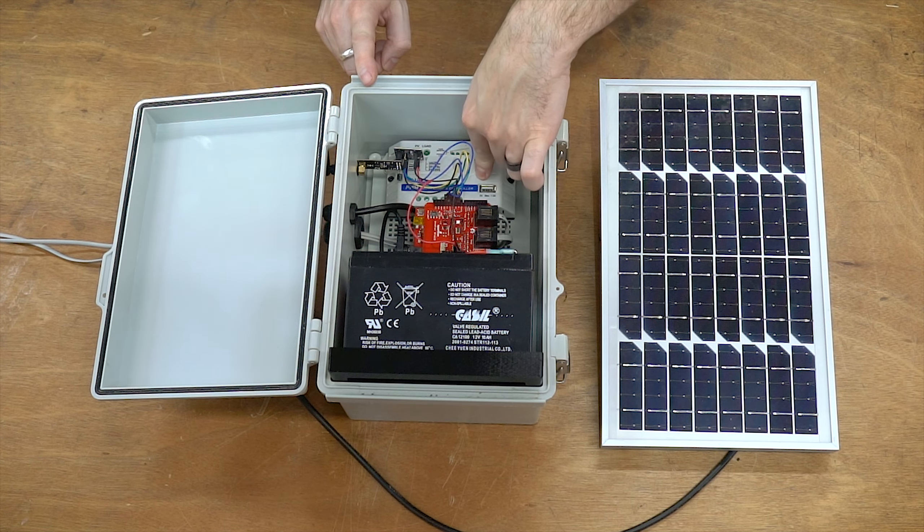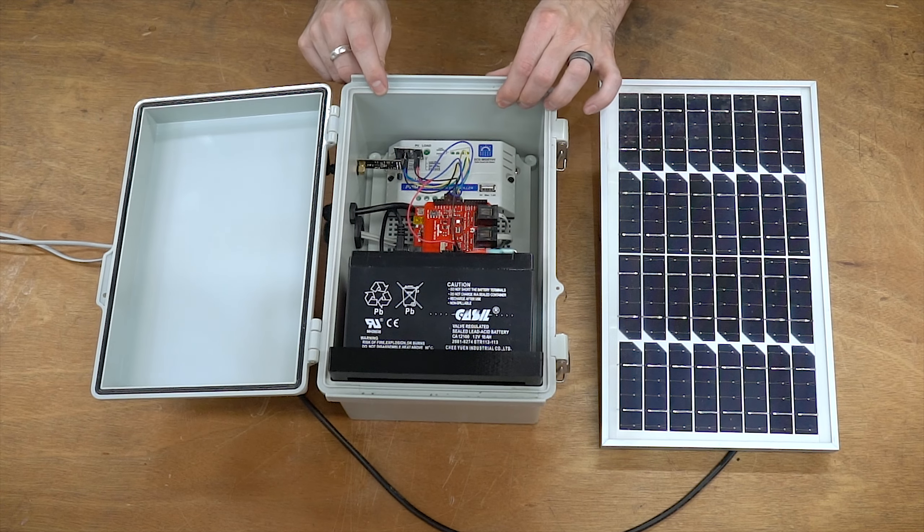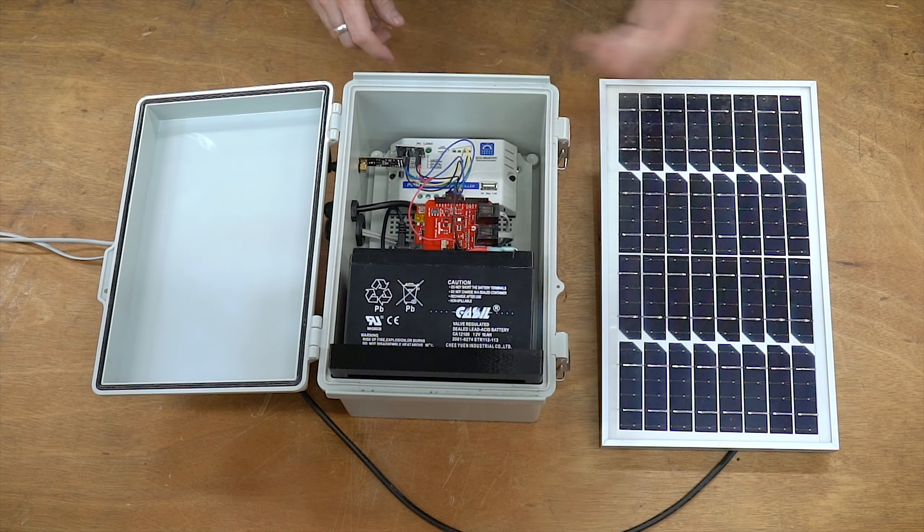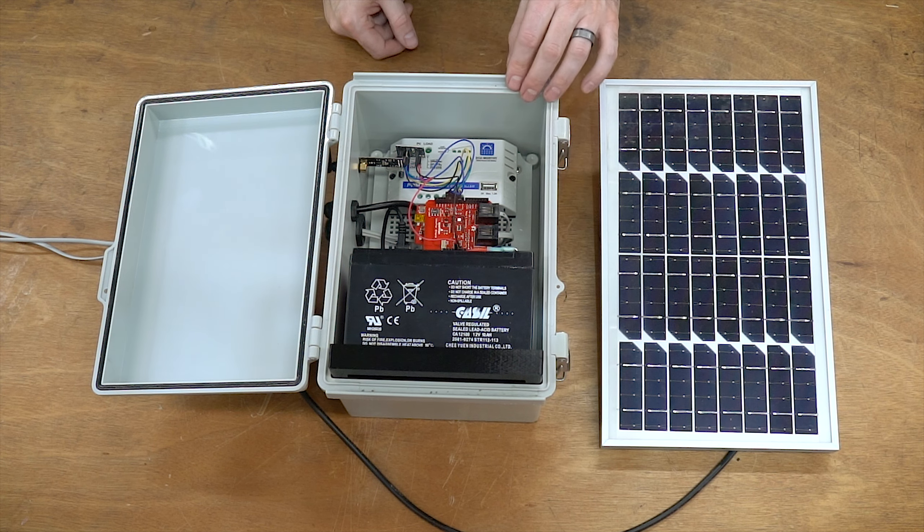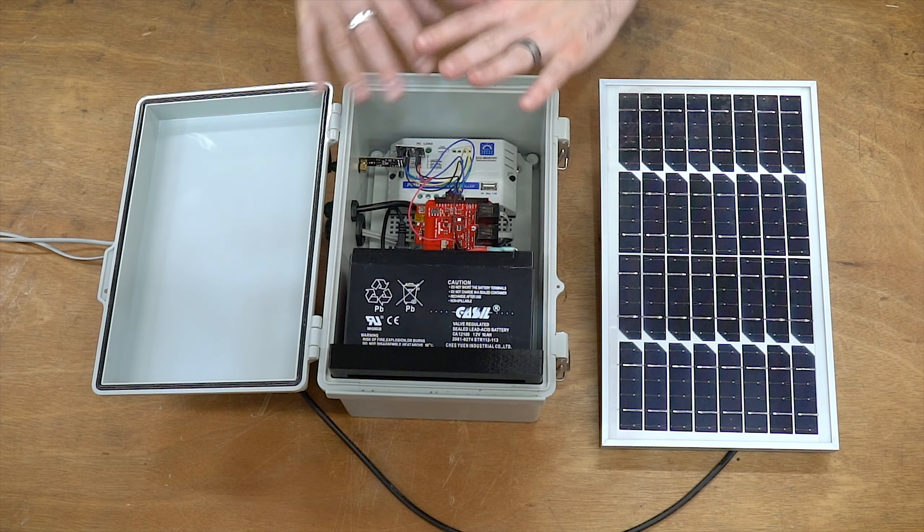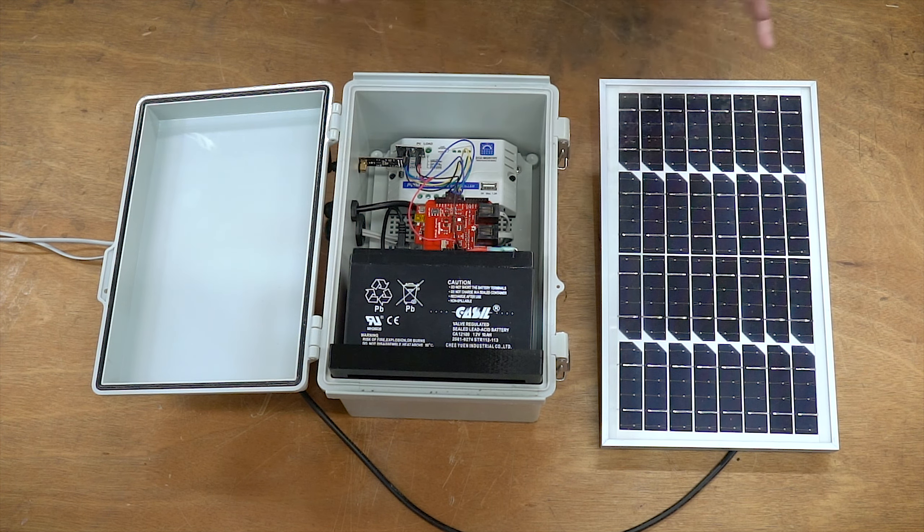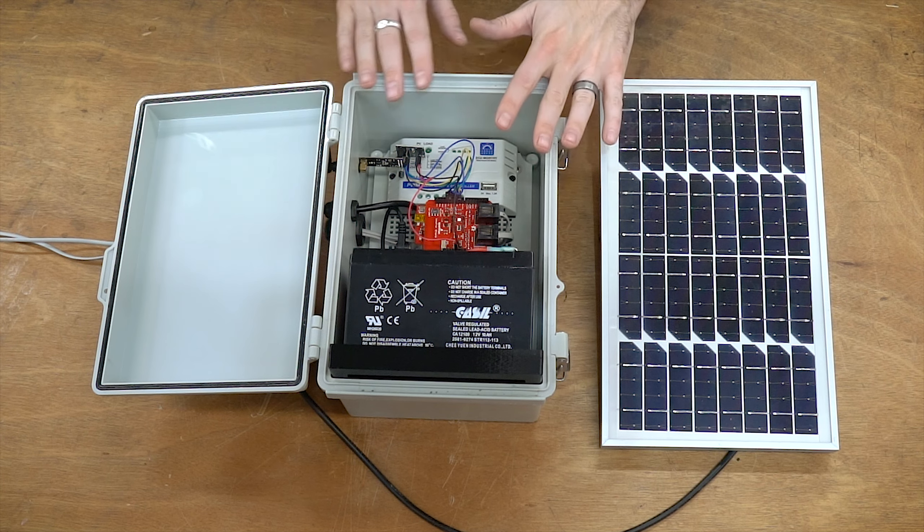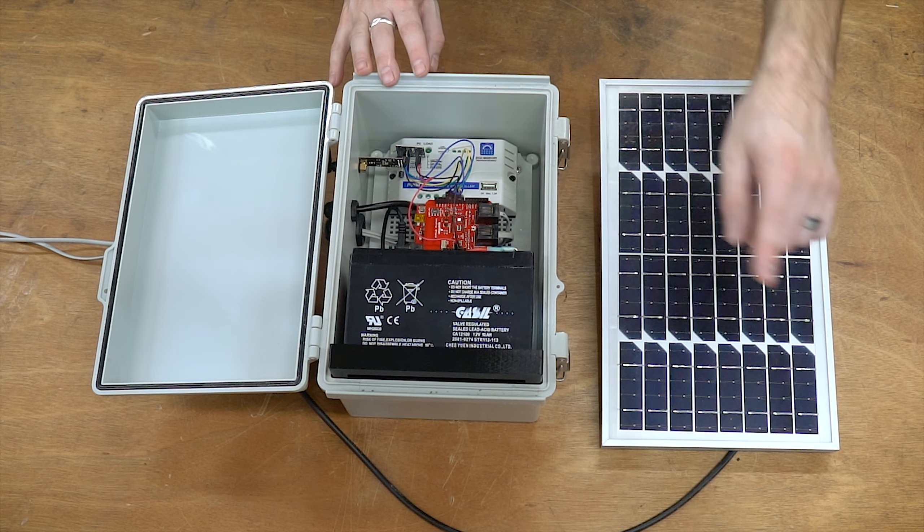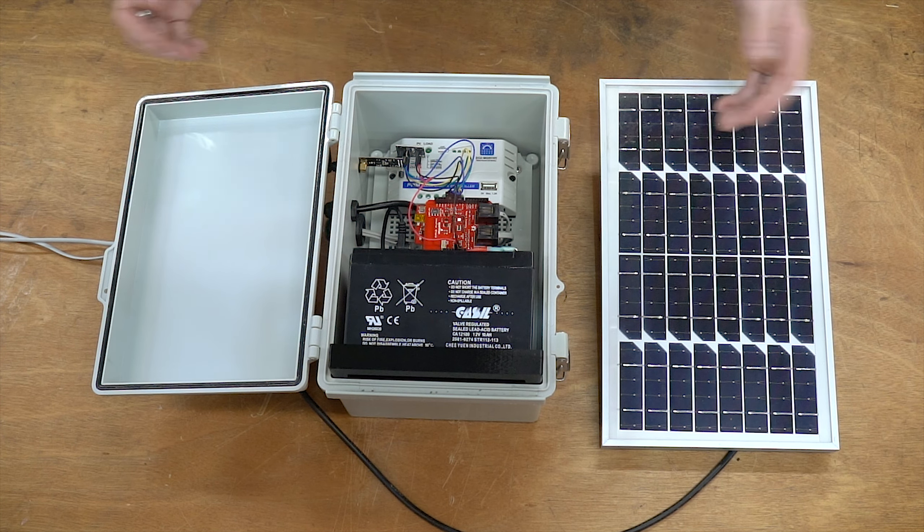These little charge controllers have gotten really inexpensive and they're really commonly available on Amazon, eBay, wherever. And I think this was only like 30 bucks, something like that. And you can set it to different battery types. They're really nice. Solar stuff has gotten a lot better. So for a power system like this, all you need is a solar panel running into a charge controller running into a battery, and then you're all set.